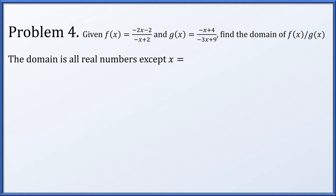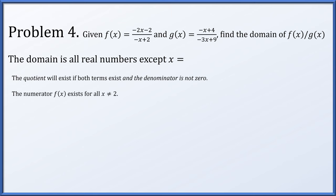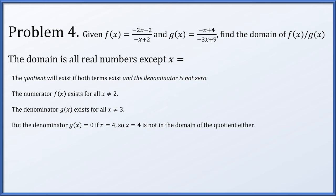For problem four, given f of x equals negative 2x minus 2 over negative x plus 2, and g of x equals negative x plus 4 over negative 3x plus 9, we need to find the domain of the quotient f of x over g of x. A quotient exists provided both numbers exist and you are not dividing by zero. So f of x exists except for x equals 2, g of x exists except for x equals 3, but the denominator f over g is zero if x equals 4 — setting g of x equal to zero gives x equals 4. So x cannot be 2, 3, or 4.